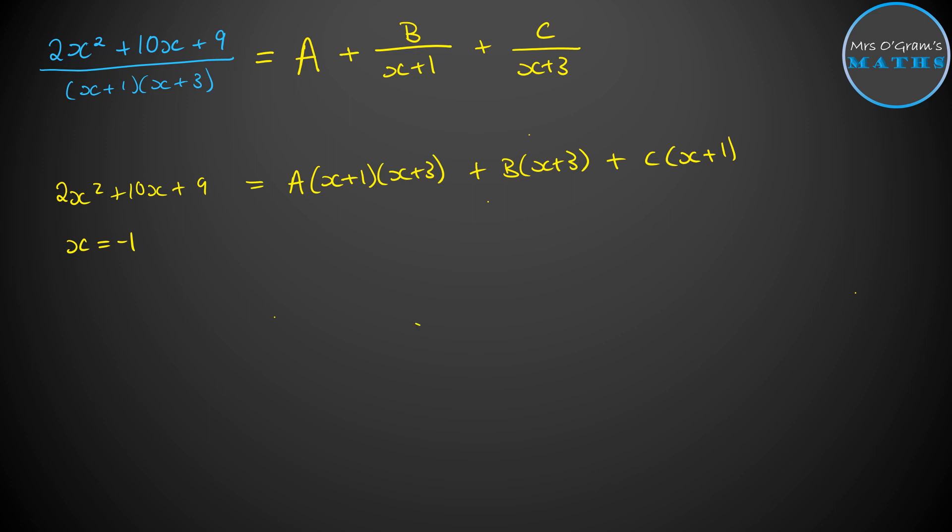So on the left hand side, we simply get a 9 if we substitute in X equals minus 1. And on the left hand side, we get 2 times minus 1 squared, which is 2, take away 10, add on 9, gets us to 1. And then on the right hand side, if we put minus 1 into our bracket with the B, because the A's and the C's they get cancelled out as getting a bracket of zero, so minus 1 plus 3 is 2B. So B is a half.